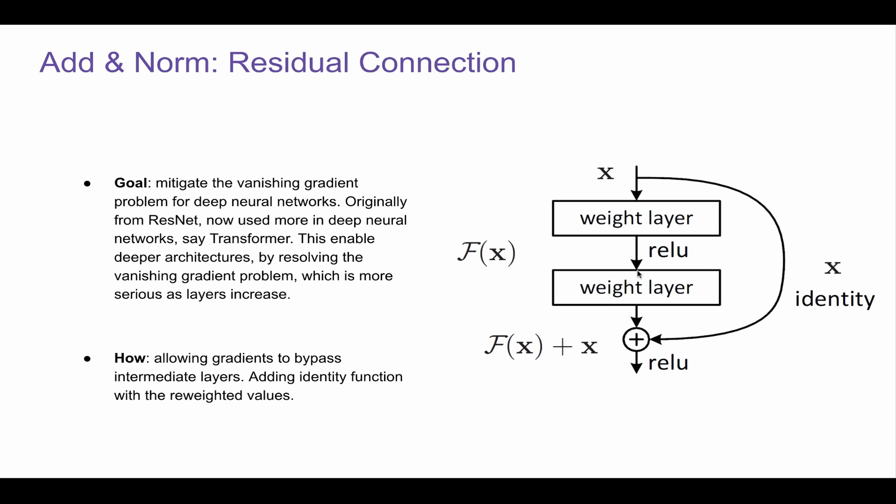This actually helps a lot in mitigating the vanishing gradients problem. The goal is, as I said, to mitigate the vanishing gradient problem for deep neural networks. This happens originally from ResNet, and now it's used more in deep neural networks, say, transformer.